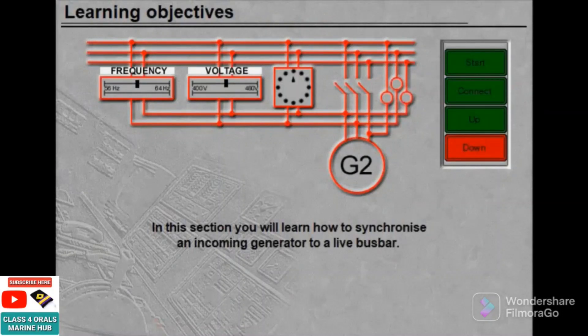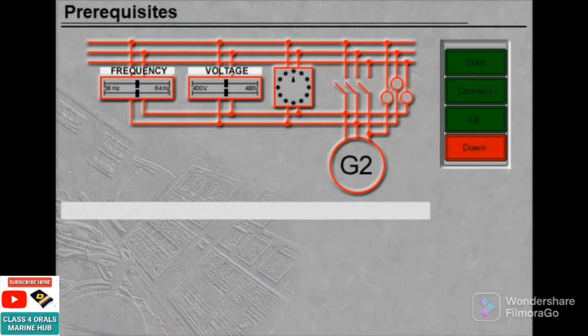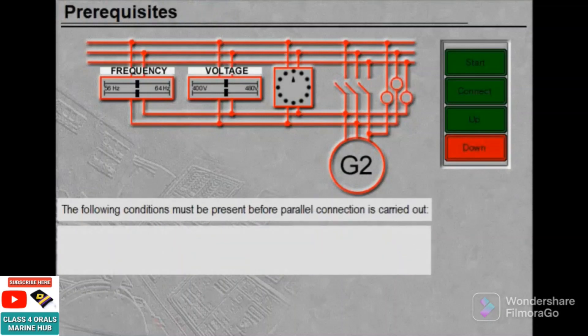In this section you will learn how to synchronize an incoming generator to a live bus bar. The following conditions must be present before parallel connection is carried out.